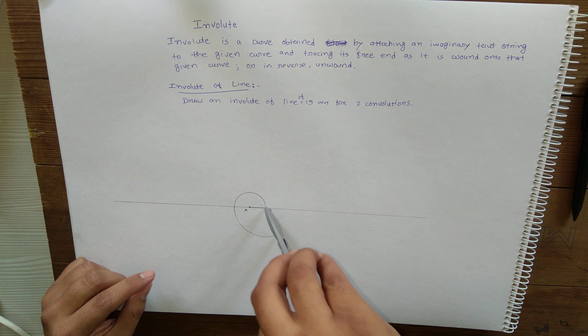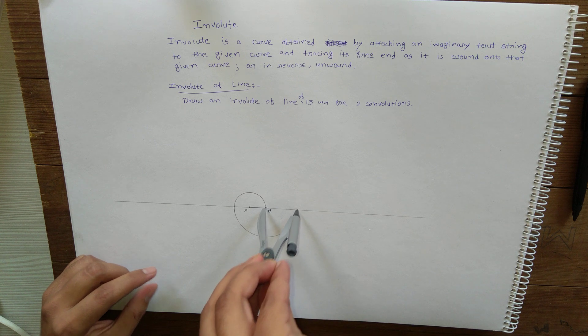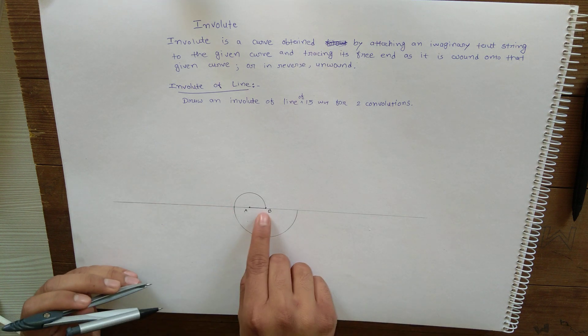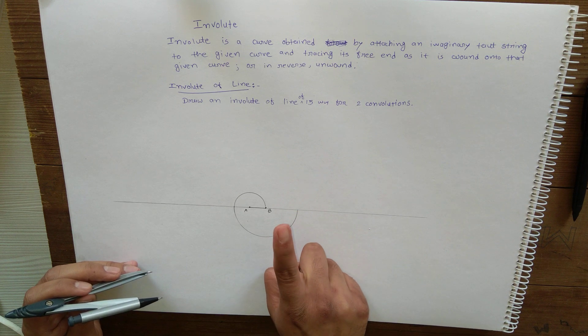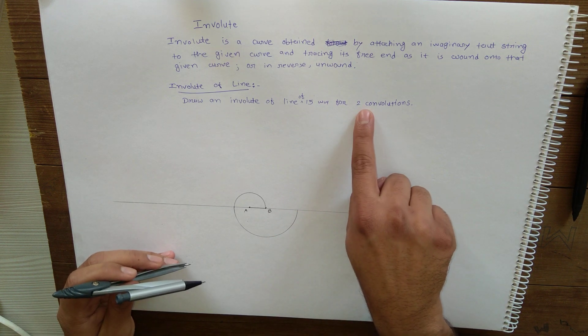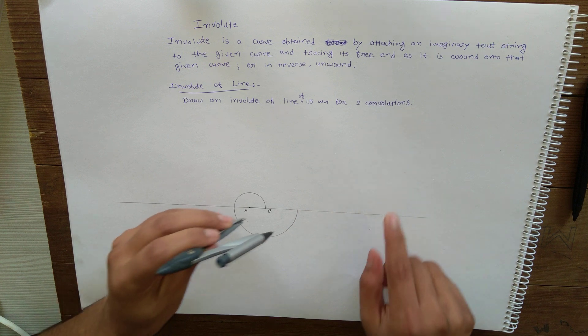So now, center as B, draw another semicircle. Again, take center as A. See, this is 180 degrees, this is 360 degrees. So one convolution is completed. We need to draw the same curve for two convolutions.